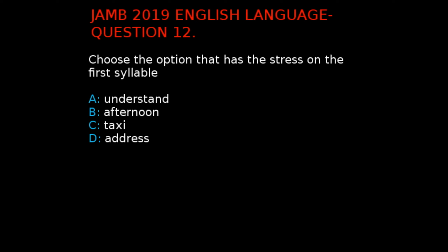Option C has its stress on the first syllable, 'tax', as it is pronounced 'TAX-i'. Option D has its stress on the second syllable, 'dress', as it is pronounced 'a-DRESS'. It therefore means that the correct answer to this question is C. Taxi.